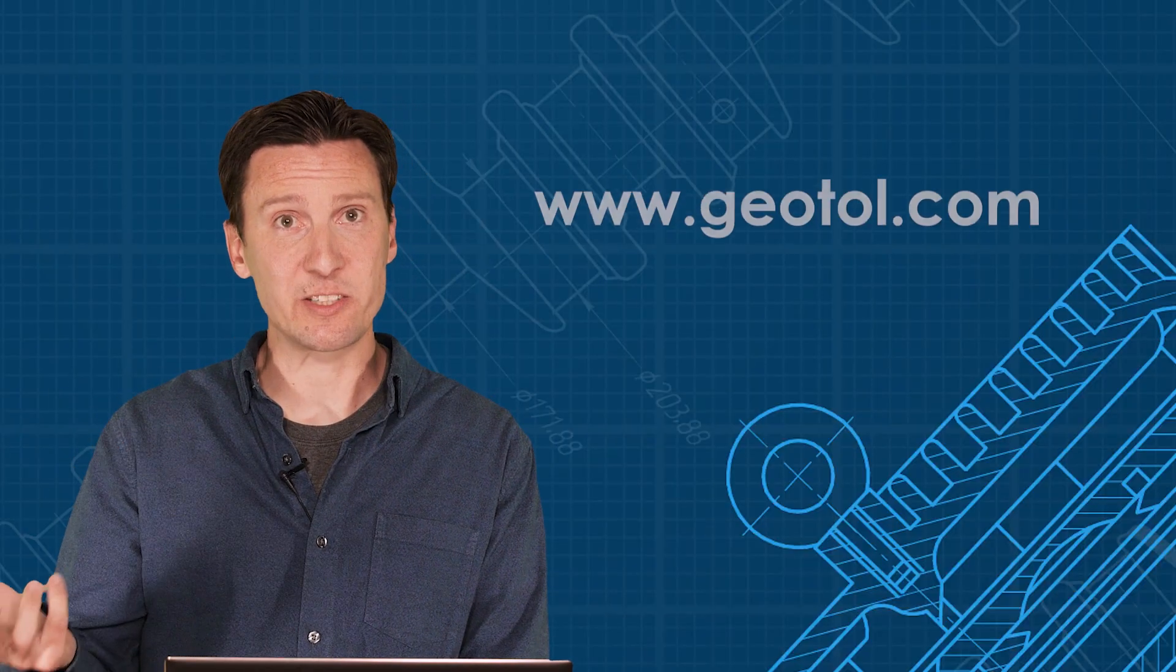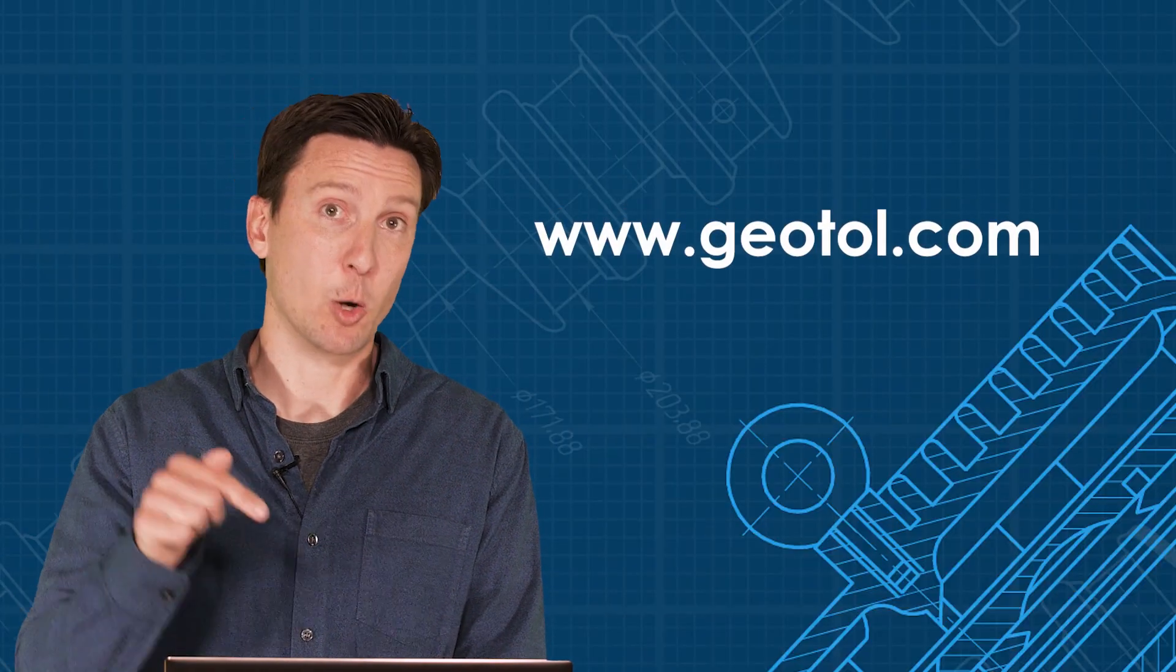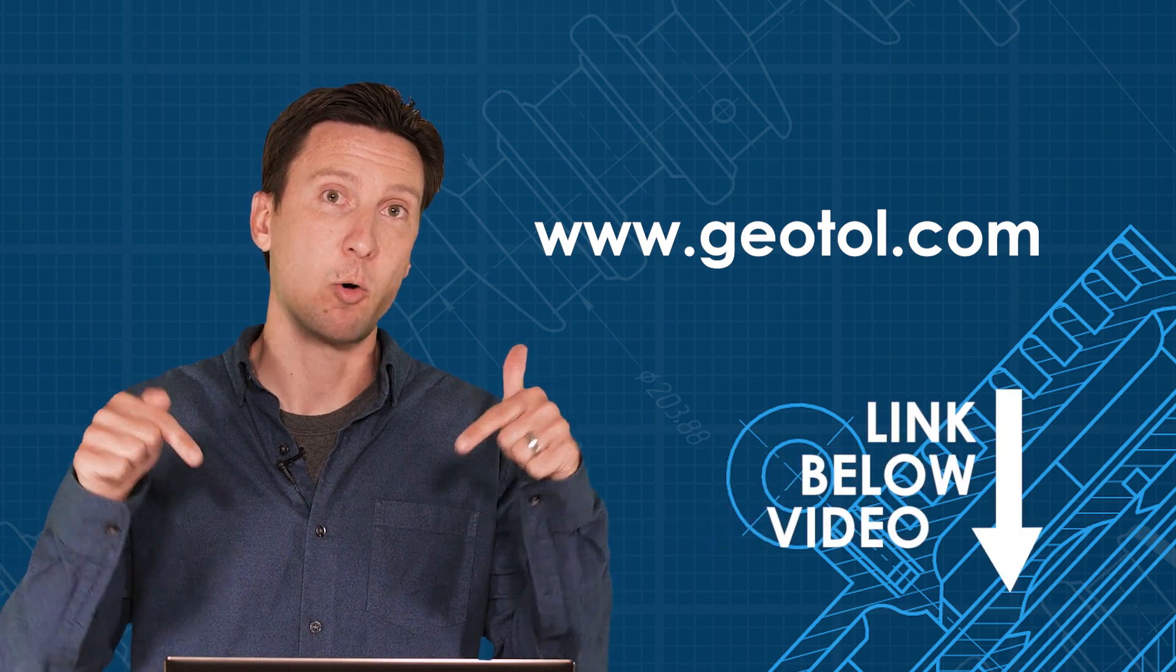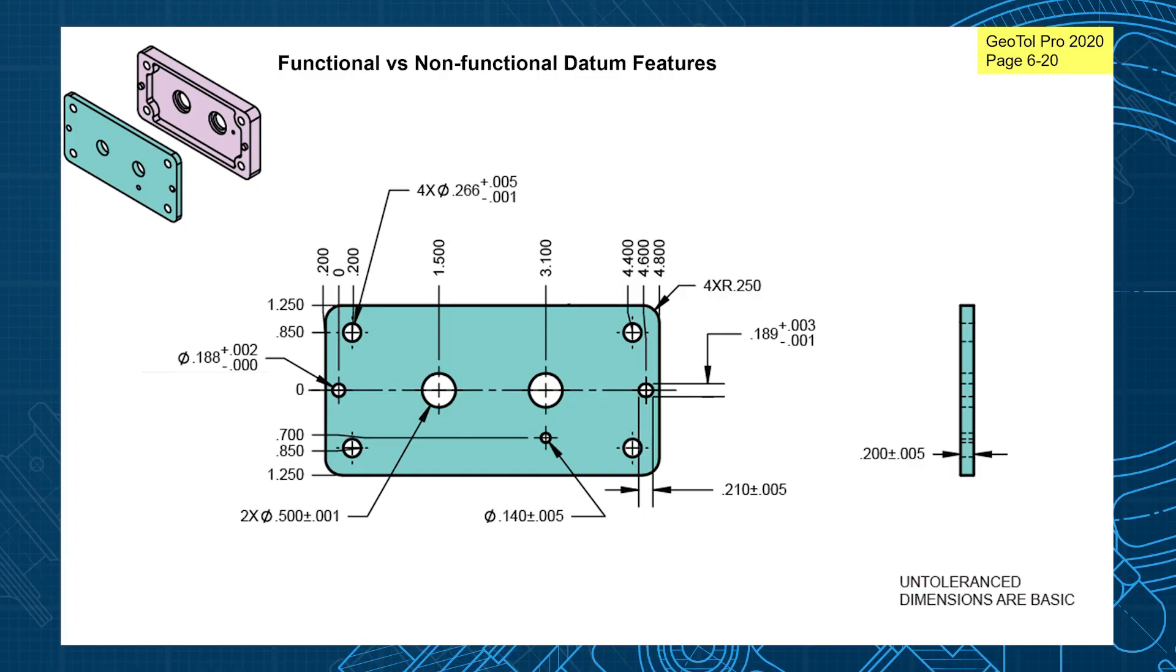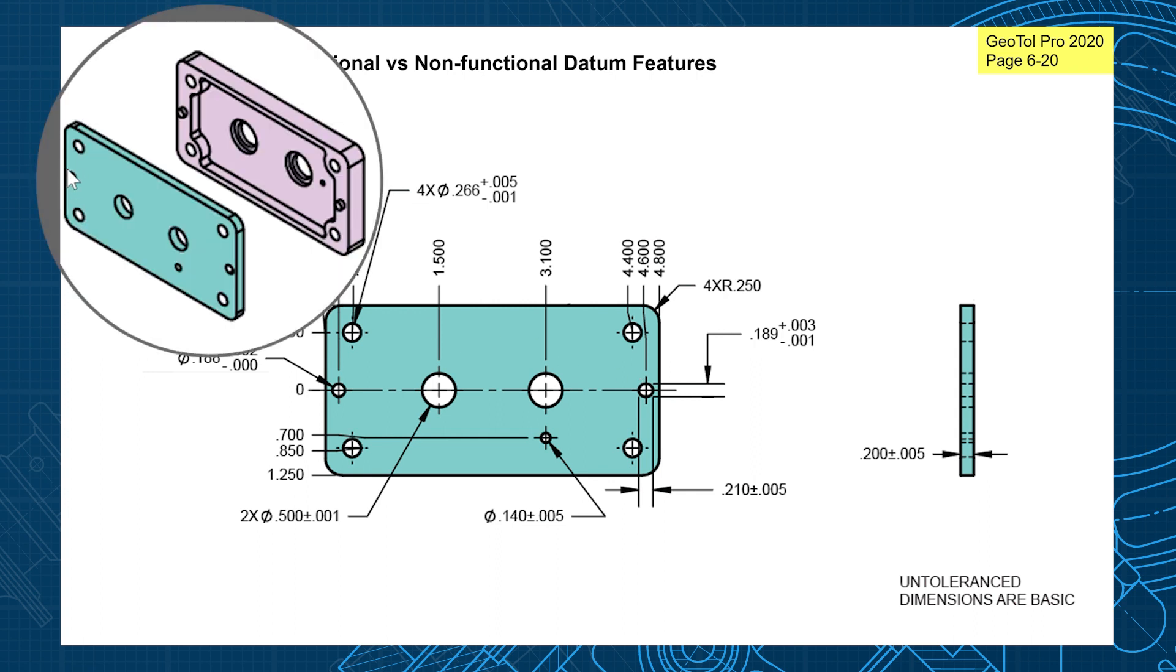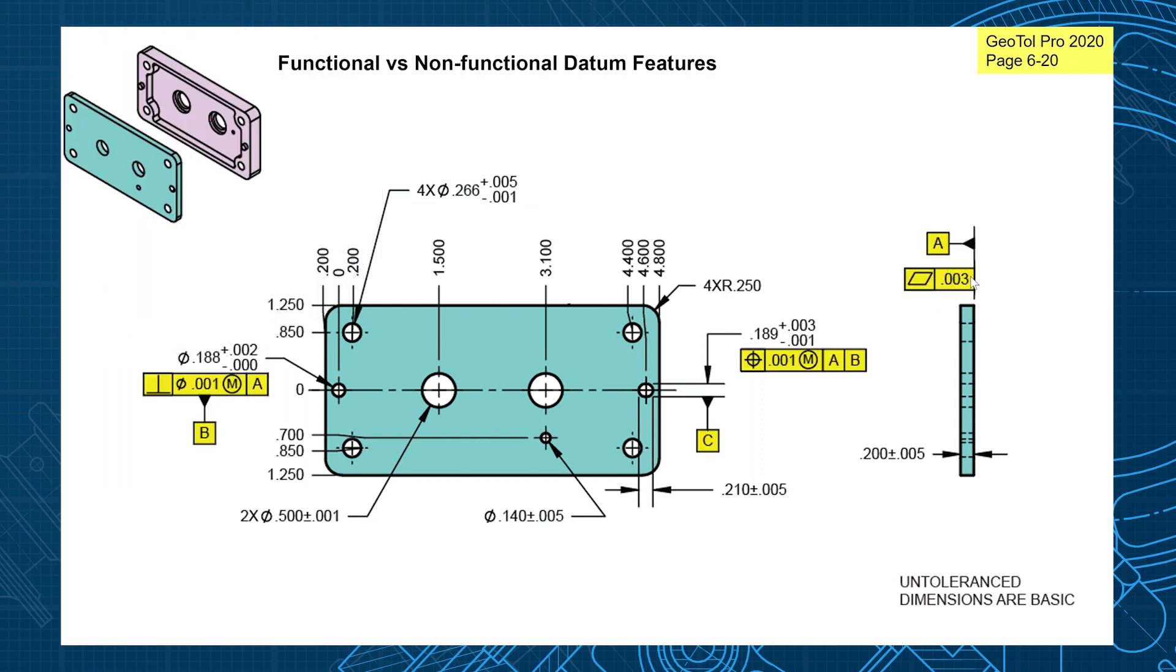This example is from unit 6 of our online fundamentals program, which you can find on our website or the link below. If you watch some of my other videos you saw how I picked the datums for function. Remember this is an alignment hole, this is an alignment slot that fit over two alignment pins. So it feels natural to select those as our datum features.